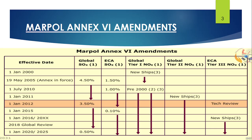Now let's look at the major amendments done in MARPOL Annex 6 for the Sulphur Cap. In 2005, two caps were introduced: one Global and one ECA (Emission Control Area). From 19 May 2005, in the Emission Control Area, sulphur in fuel must be below 1.50%, while globally the fuel oil sulphur percentage was set at 4.50%.